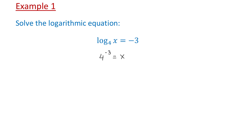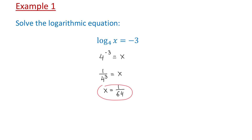To evaluate 4 to the negative third power, we will move 4 down to the denominator and make the exponent positive. 4 to the third power is 64, so x equals 1 over 64. The solution is 1 over 64.